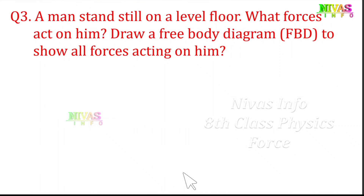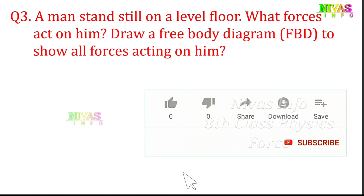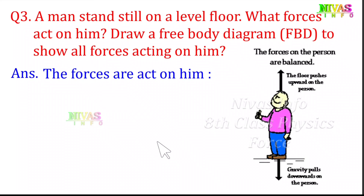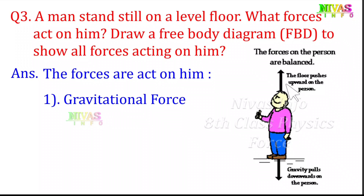Question number 3: a man stands still on a level floor. What forces act on him? Draw a free body diagram to show all forces acting on him. On any object on a surface, particular forces are applied. The first one is gravitational force. Gravitational force attracts every object downward. This person's weight is the gravitational force acting downwards.